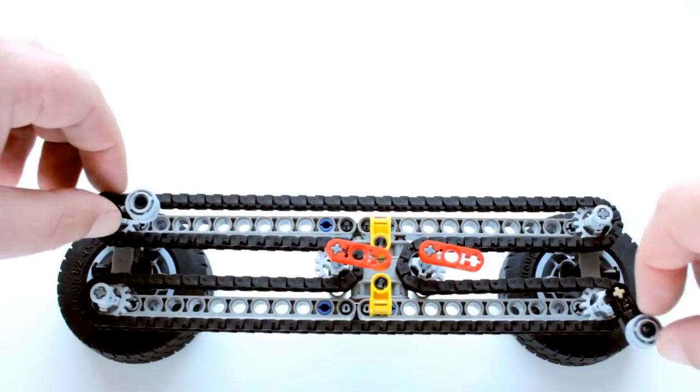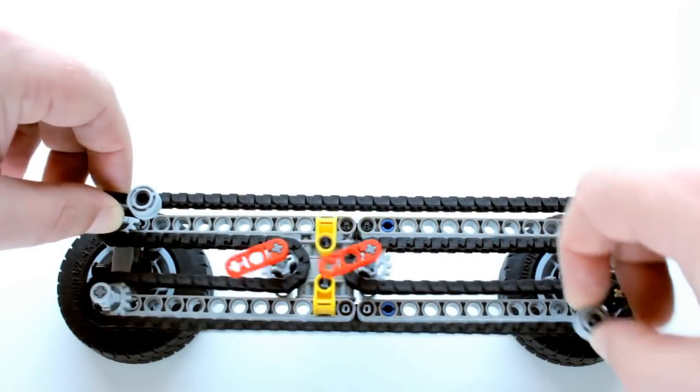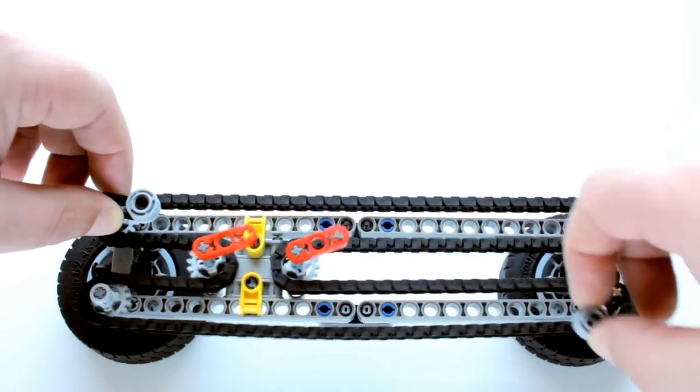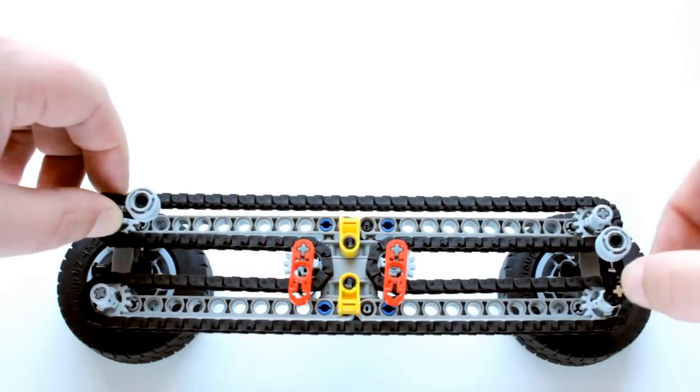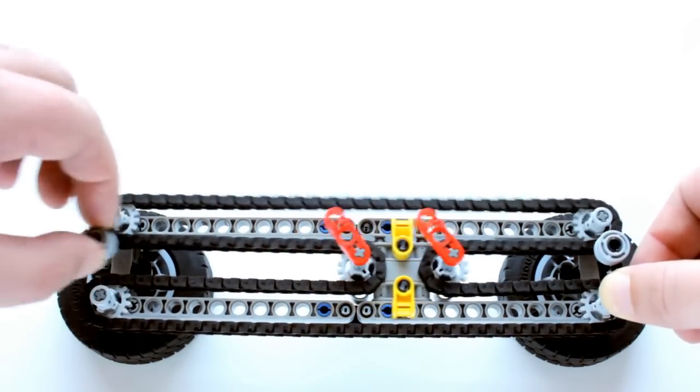When I just rotate one of the cranks, the red lift arms still rotate but now the shuttle also moves from side to side. Likewise when I rotate the other crank, the red lift arms still rotate and the shuttle still moves from side to side.